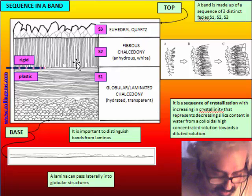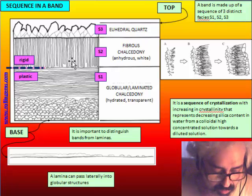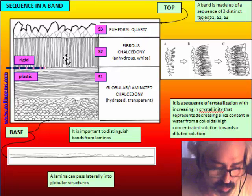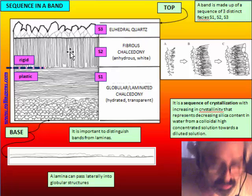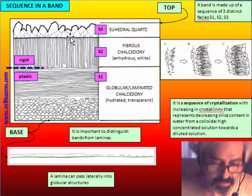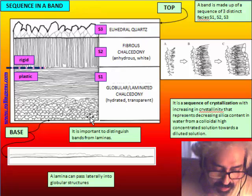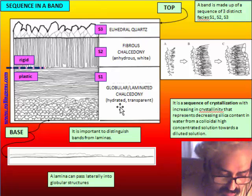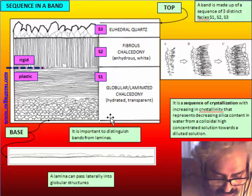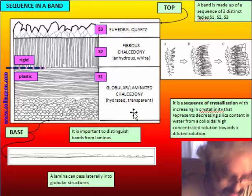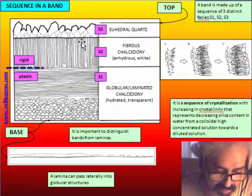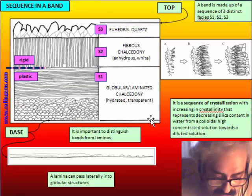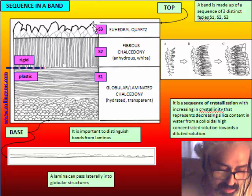Fibrous chalcedony has very little or no water, so if you dye the agate this portion does not take the color — it is crystalline, just as quartz does not take color. Quartz is always at the top of the sequence. In geology, recognizing a sequence is very important to understand genetic behavior. Like turbidites, the most difficult task is to recognize which end is the base and which is the top.